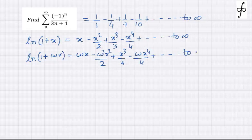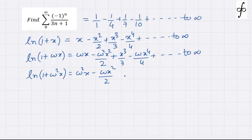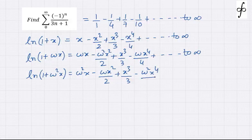Then ln(1+ω²x) comes out to be ω²x - ωx²/2 + x³/3 - ω²x⁴/4 + ... to infinity.